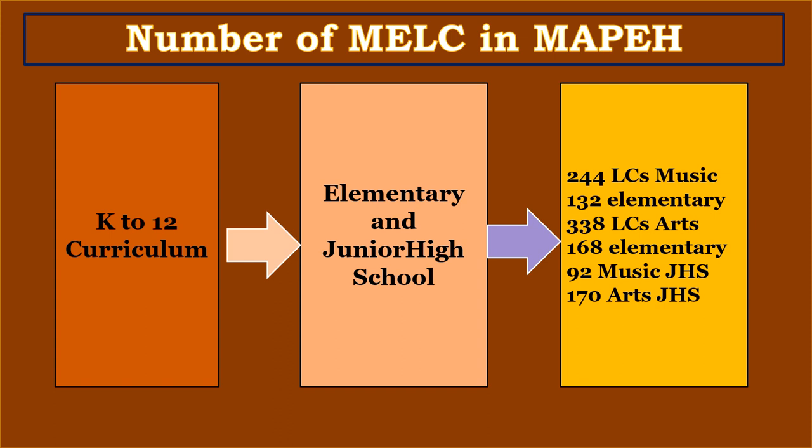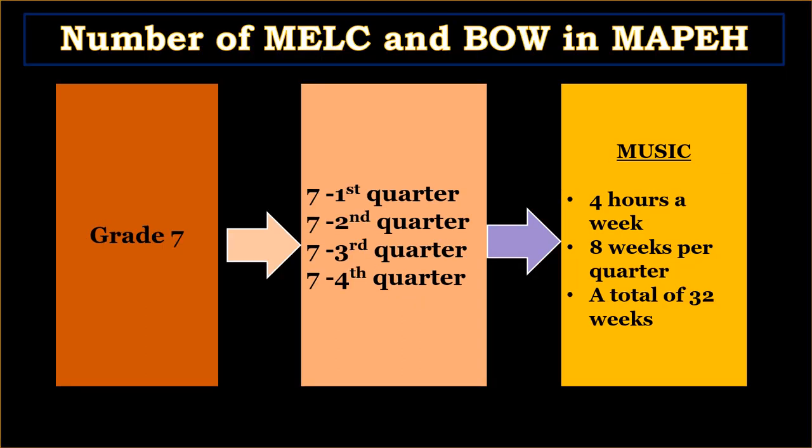For the number of MELCs in MAPE — the K-12 for elementary and junior high school — for elementary we have 244 learning competencies or MELCs for Music, and 132 for elementary; 338 LCs in Arts, 168 for elementary, and 92 for Music, and 170 for Arts in junior high school. For the number of MELCs and BOW in MAPE — in Grade 7, we have 7 in the first quarter, 7 in the second quarter, 7 in the third quarter, and 7 in the fourth quarter. Music: 4 hours a week, 8 weeks per quarter, for a total of 32 weeks.